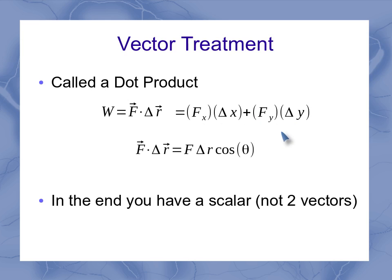In the end, regardless of which way you do this, you don't have two vectors anymore. You simply have a scalar. So sometimes this dot product is also called the scalar product.